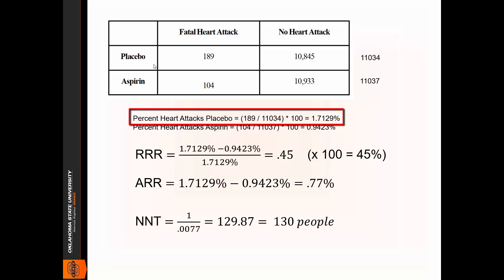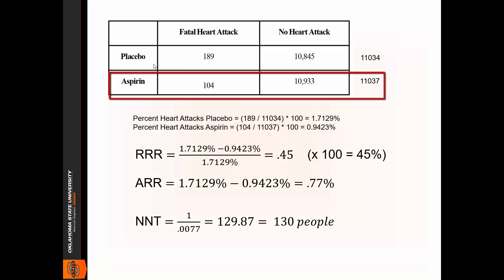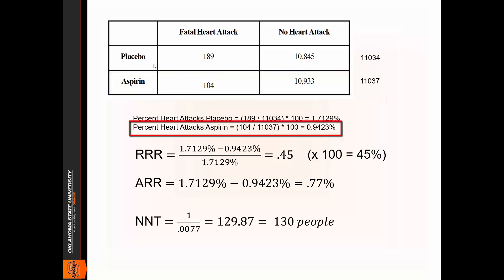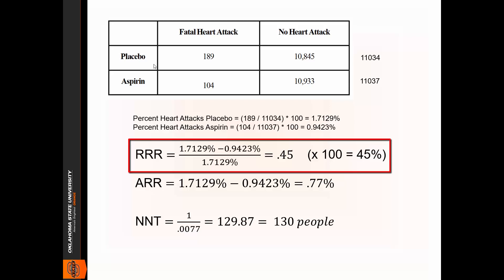We also need the percent of individuals who suffered a heart attack who consumed the aspirin. So I have the total number of individuals who consumed the aspirin, and 104 divided by that times 100 gives me the percentage of 0.9423 percent. So then take those numbers, and now we consider the placebo as the control group, the baseline. If you're just taking sugar pills or not doing anything, what percentage of individuals will suffer a heart attack? So we take that 1.7129 percent, subtract the percentage for the aspirin, the treatment, and divide it by that baseline again, the placebo, and that gives us a result of 0.45.